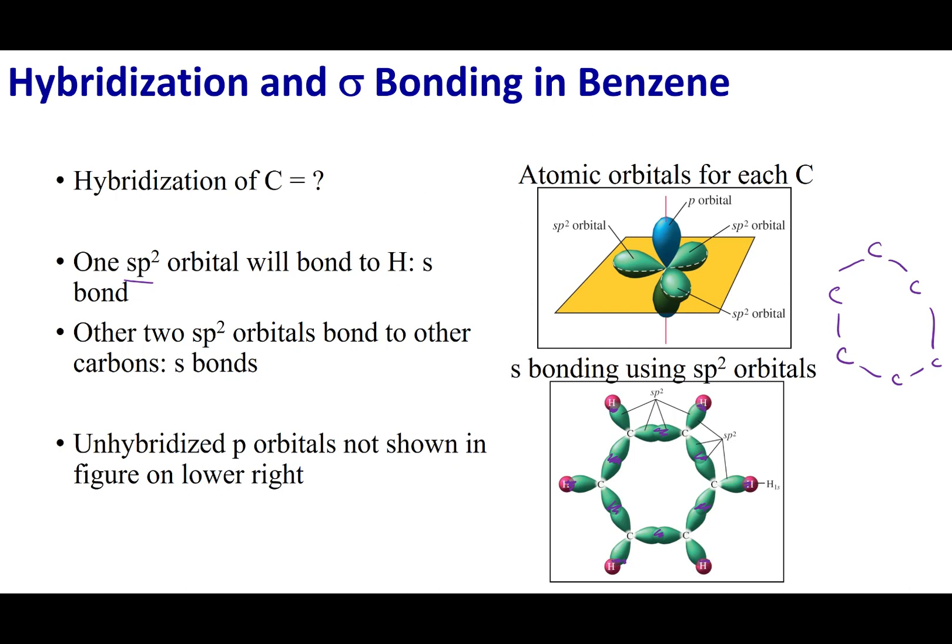Now, what is left over is the unhybridized p orbitals. Now, on each one of those carbons is an unhybridized p orbital.